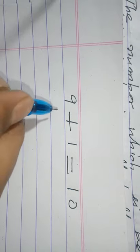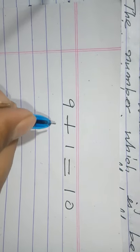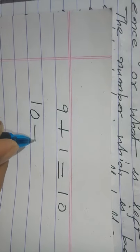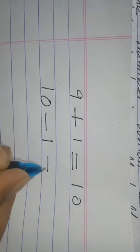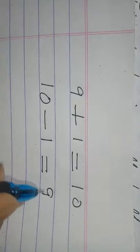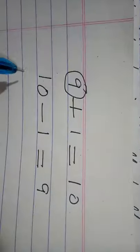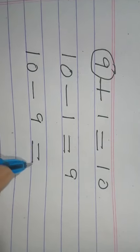So, there are two facts. 10 minus 1 equal to 9. And 10 minus 9 equal to 1. There are two facts.